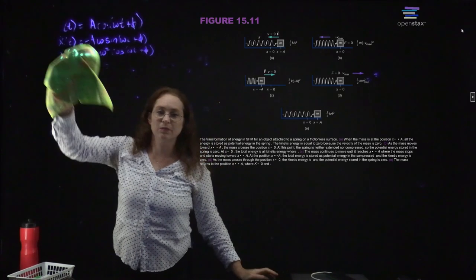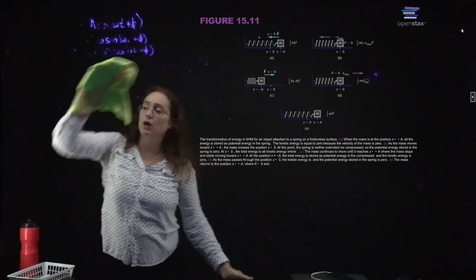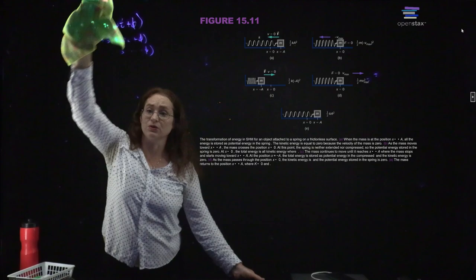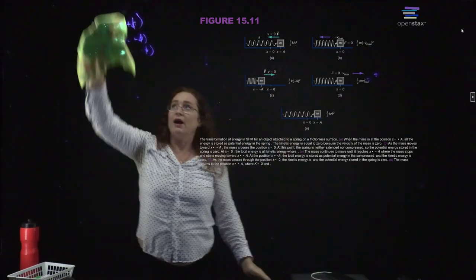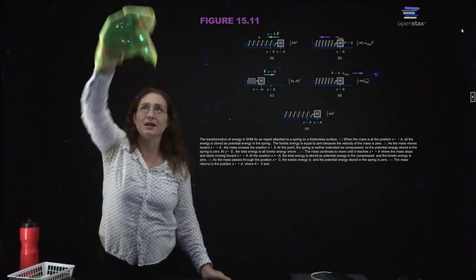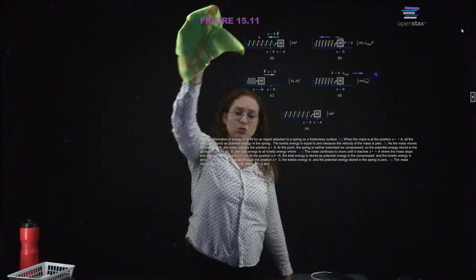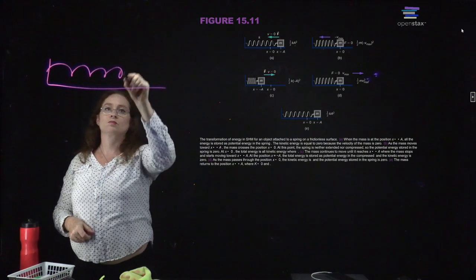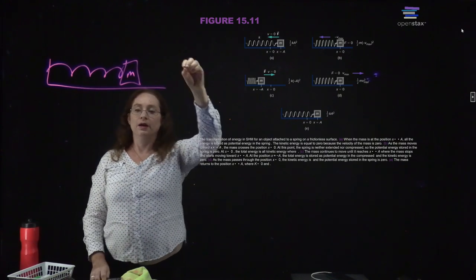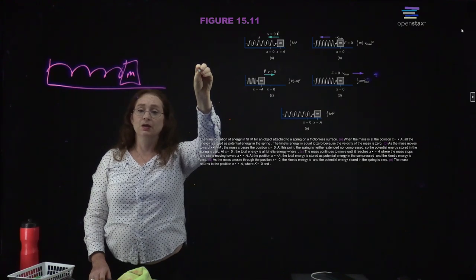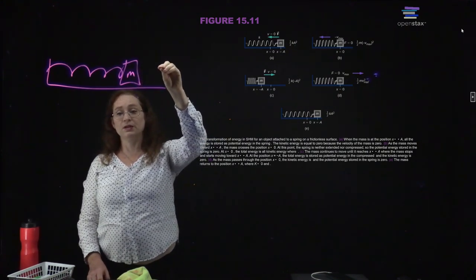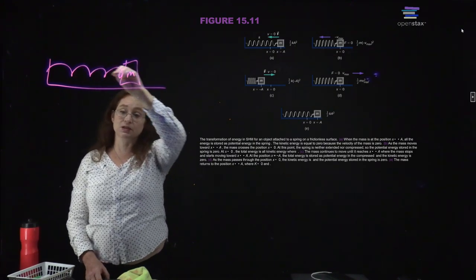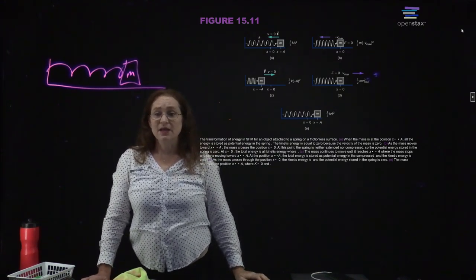We can also talk about what happens to the energy. When you are at equilibrium you have no potential energy, but everything you have is kinetic energy. When your spring oscillates, at the maximum amplitude you have all potential energy and no kinetic energy. As you come in, your potential energy is decreasing and your kinetic energy is increasing. As you move out again, your potential energy is increasing and your kinetic energy is decreasing. So the distribution of kinetic and potential energy oscillates as the system goes back and forth.